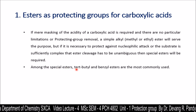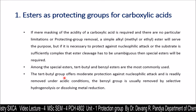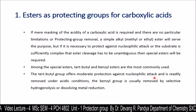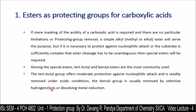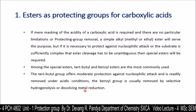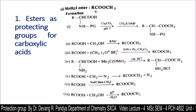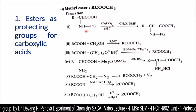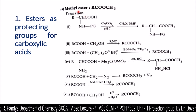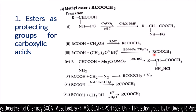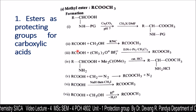Among the special esters, t-butyl and benzyl esters are the most commonly used. The t-butyl group offers moderate protection against nucleophilic attack and is readily removed under acidic conditions. The benzyl group is usually removed by selective hydrogenolysis or dissolving metal reduction. These examples indicate the protection of the carboxylic group by converting it into a methyl ester — here you can see the ester group present in each case.